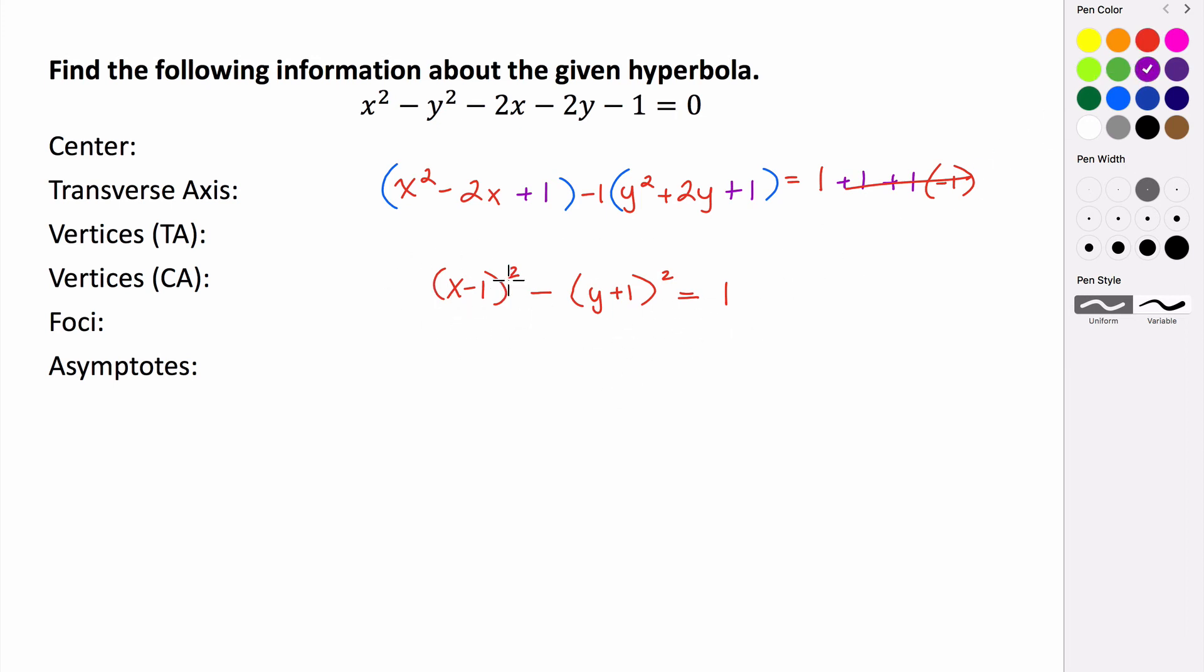So this is actually our standard form equation. If you feel more comfortable and it helps you see the values of a and b a little bit better, we could write this as being divided by 1. And now it looks more like the standard form equation that we're used to. So this is our standard form equation, and we're going to use this equation to try and find all of this information.